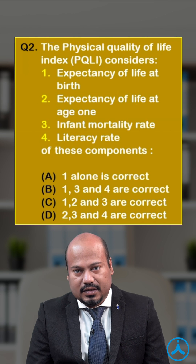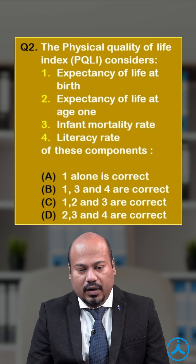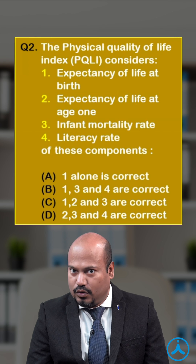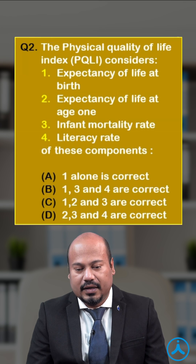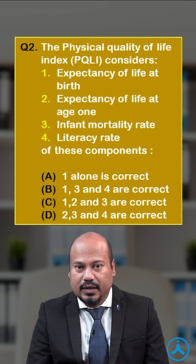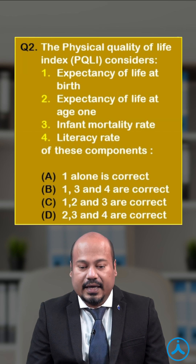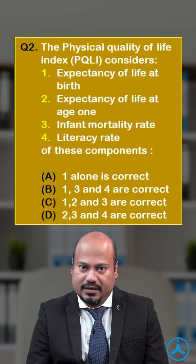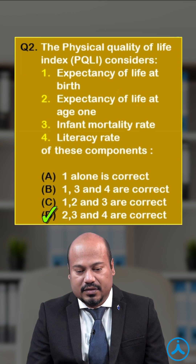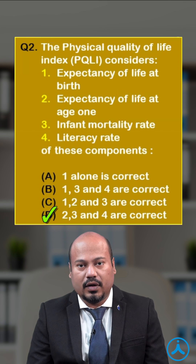One more MCQ: 'The Physical Quality of Life Index considers which statements?' Statement 1 — expectancy of life at birth: No, that's a component of HDI. Statement 2 — expectancy of life at age one: Yes. Statement 3 — infant mortality rate: Yes. Statement 4 — literacy rate: Yes. So the correct answer is option D — statements 2, 3, and 4 are correct.